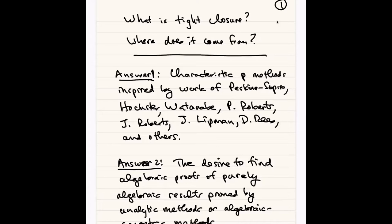Hochster and Joel Roberts' proof that rings of invariants are Cohen-Macaulay — which you'll hear about in these lectures — Kiichi Watanabe, Gotoh, and others started taking up the idea of F-purity, which you'll also hear about. Paul Roberts used characteristic P methods to study homological methods. And Lipman and Rees were very important in terms of their work on integral closures, even though they didn't directly use characteristic P methods. So that's my first answer: it came from a long history of characteristic P methods and problems to which you could apply them.